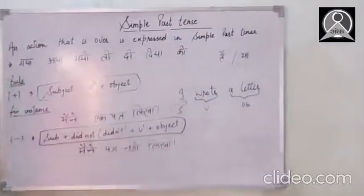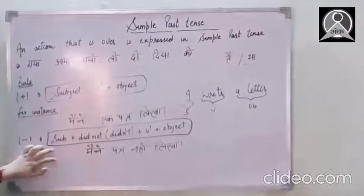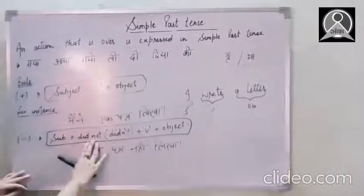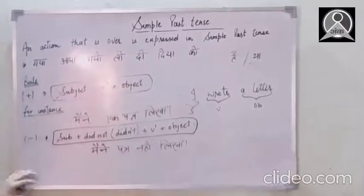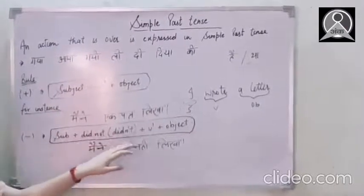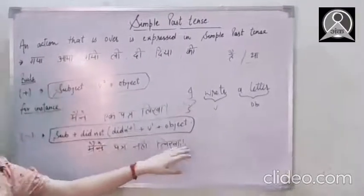So now, we are moving on to the another part and that is negative sentences. So all we have to do is we have to change the verb's second form with the verb's first form. And we have to put did not or we can say didn't. So firstly, as usual, subject plus did not or didn't. Didn't is the contracted form of did not. Plus verb's first form plus object.